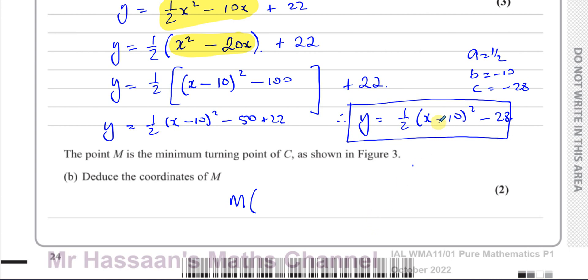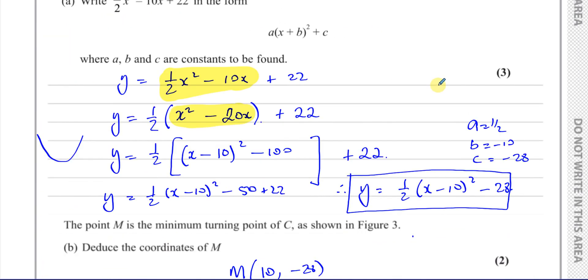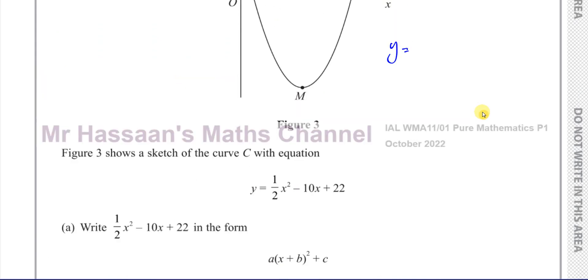In this case, it's a minimum point because you have a quadratic which opens upwards, smiley face, because the coefficient of x squared is positive. But what we can see here is that the x-coordinate of the turning point is going to be 10, and the y-coordinate is negative 28. And how does that make sense? Well, if we write it in the complete square form, a half times x minus 10 squared minus 28.